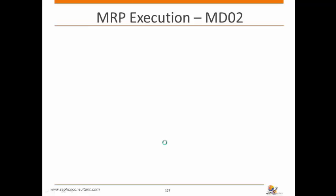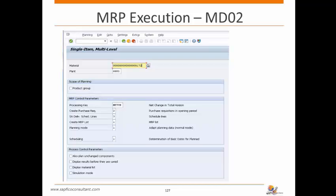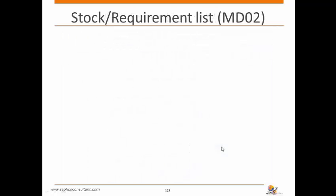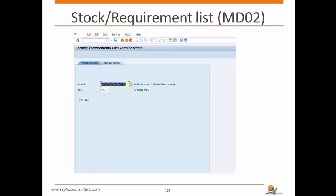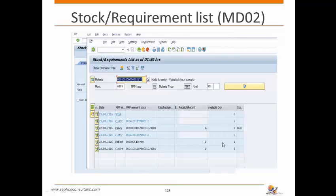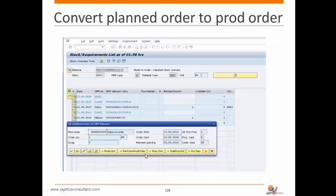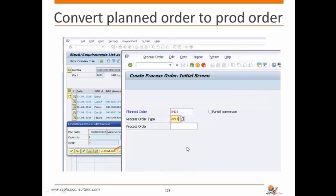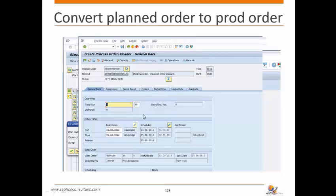Next, MRP is executed via transaction MD02. Based on the saved sales order, MRP execution is typically run via a background job by the production planning team. The material and plant 6603 are updated. In the stock requirements list, a planned order has been created for the sales order. Double-clicking the planned order allows conversion to a production or process order. The process order type is ZPI1, and the total quantity is updated to 1 kg.